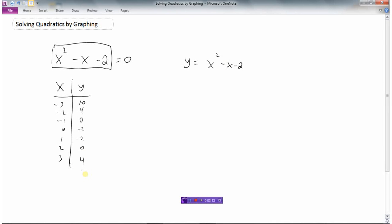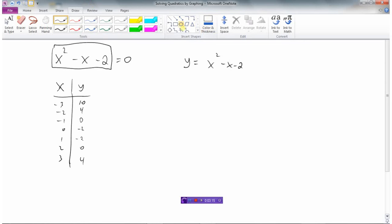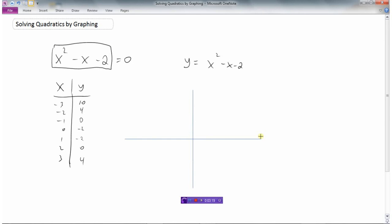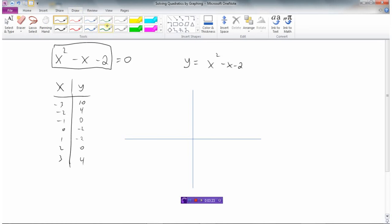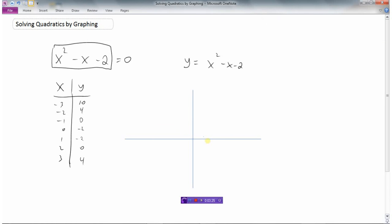And we would get something that looks like this for a table of values. Now we could create a graph and plot these points on our graph.